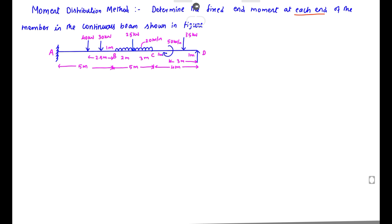In the continuous beam, there are members A-B, B-C, and C-D — three members in total. The loads are: 40 kN and 30 kN point loads, 25 kN and 35 kN point loads, a UDL of 20 kN/m over 5 meters, and a moment of 50 kN·m. We only need to find the fixed end moments, not the shear force or bending moment.